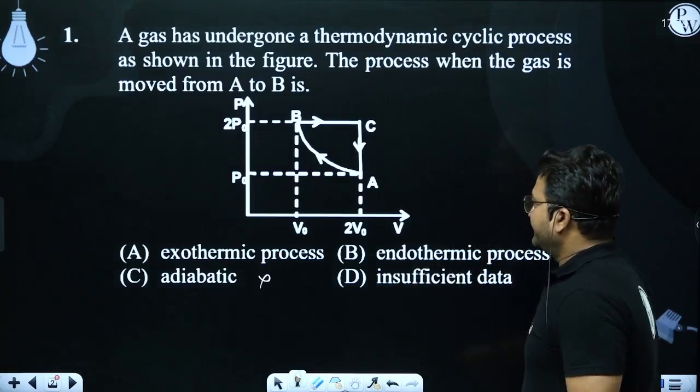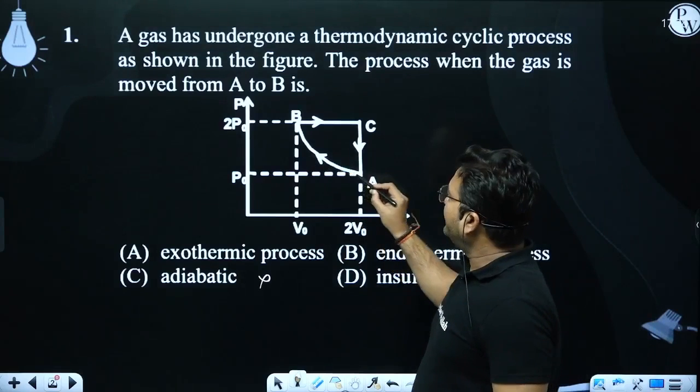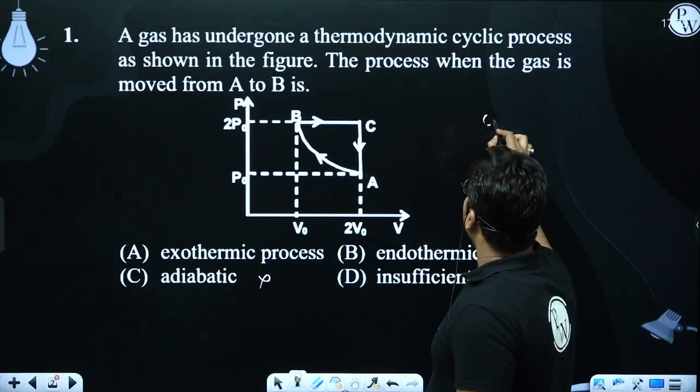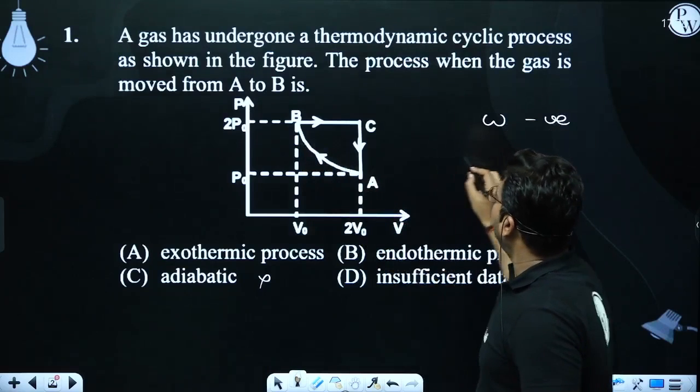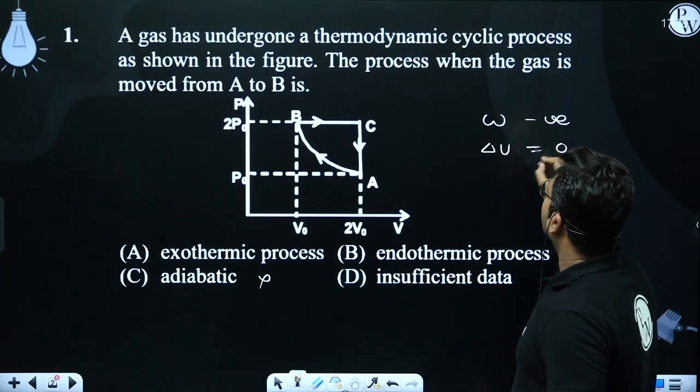Now you can see the volume. So what is negative? For an isothermal process, the change in internal energy is 0.